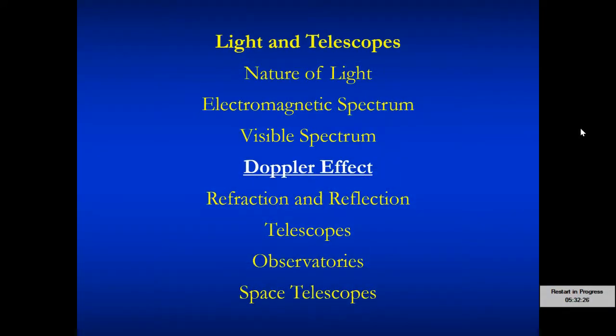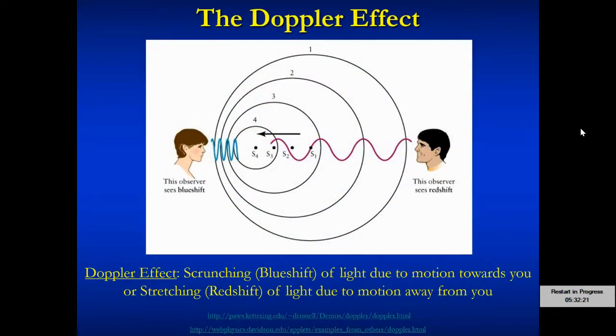One last part of the whole story on light here today is the Doppler effect. The Doppler effect is basically the scrunching or stretching of light waves due to motion. So in this picture here, you see this object, S1, S2. Each position, as it moves and propagates to the left here, it emits light waves. And as it moves towards this observer here on the left, the light waves that are being emitted are scrunched together due to the motion. And so if you think about the visible part of the spectrum, if waves are scrunched together, they're going to be more towards the blue part of the spectrum. We call this blue shifting.